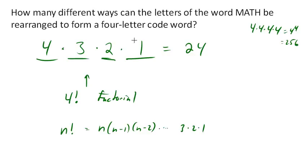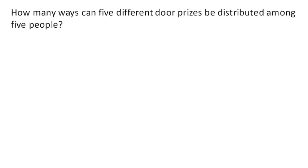Okay, let's look at another problem. How many ways can five different door prizes be distributed among five people? So we've got five people, and we got five different prizes. So how many choices are there for the first person? Five. How about for the second? Four. Three. Two. And one. Or in other words, five factorial.